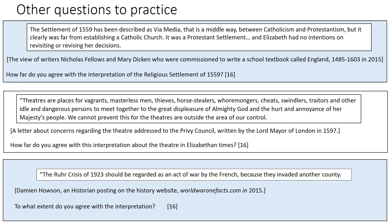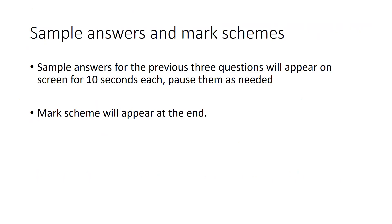Now that you've had a look at a model answer for the previous question, there are three questions appearing on screen for you to try. The first two are from the Elizabeth papers and the last one is from a Germany paper. If you want to pause the video now, you can write down the question you would like to do, and model answers will appear in a few moments. Here are some sample answers for the previous questions — each will appear on screen for 10 seconds. I know that's not enough time to read them in their entirety, but you can pause the video and read through them as a sample to improve your own work. A mark scheme will also appear at the very end.